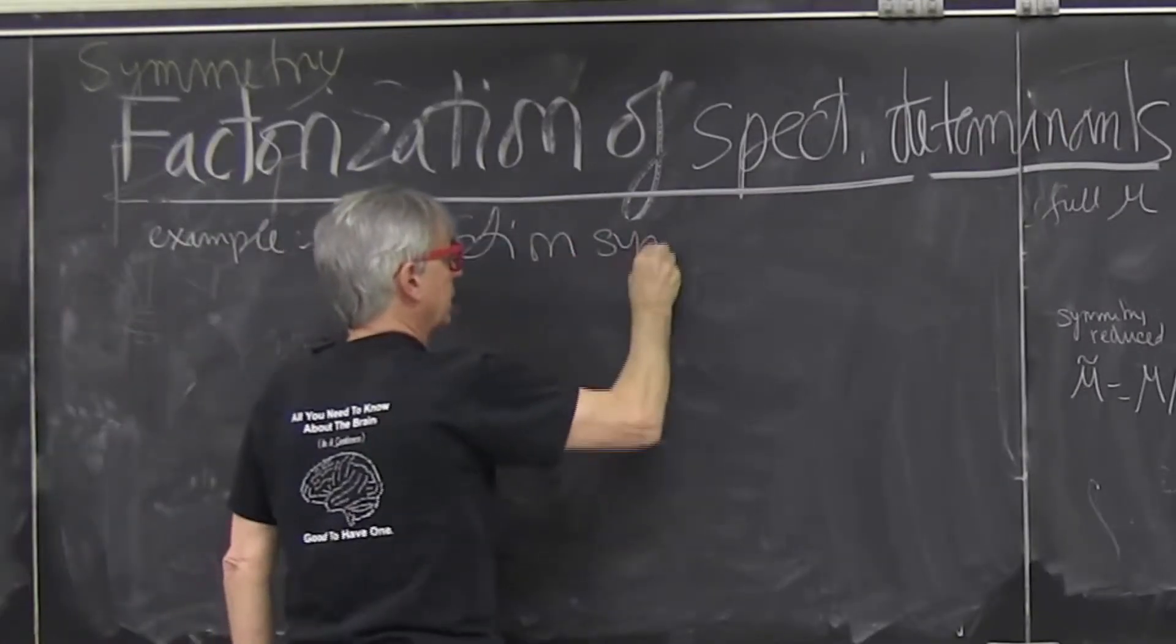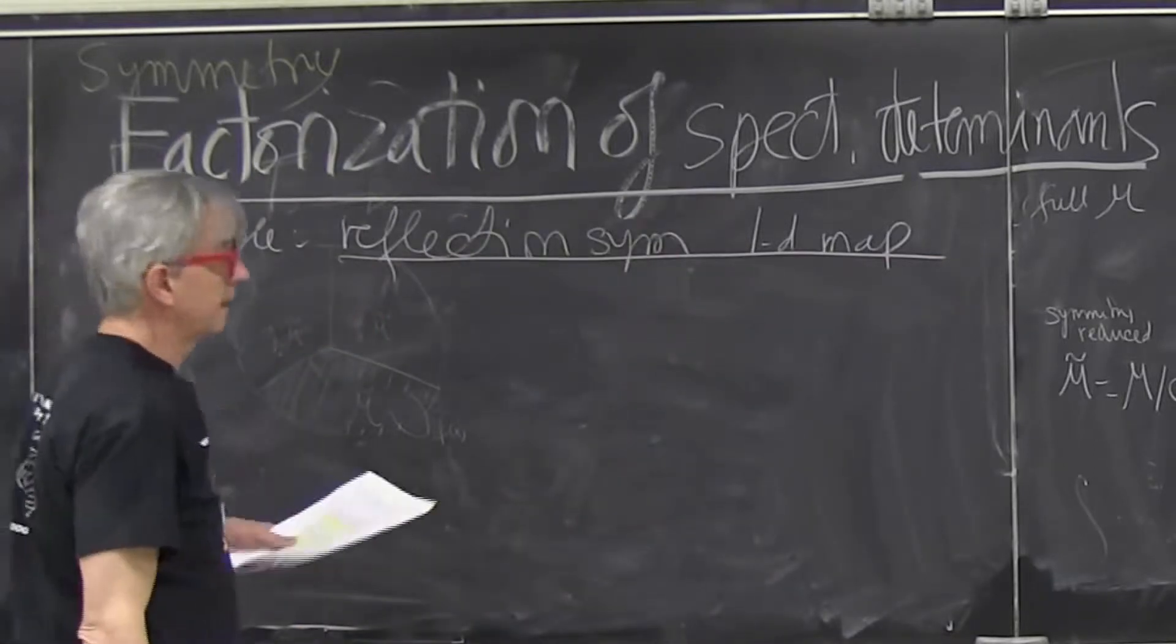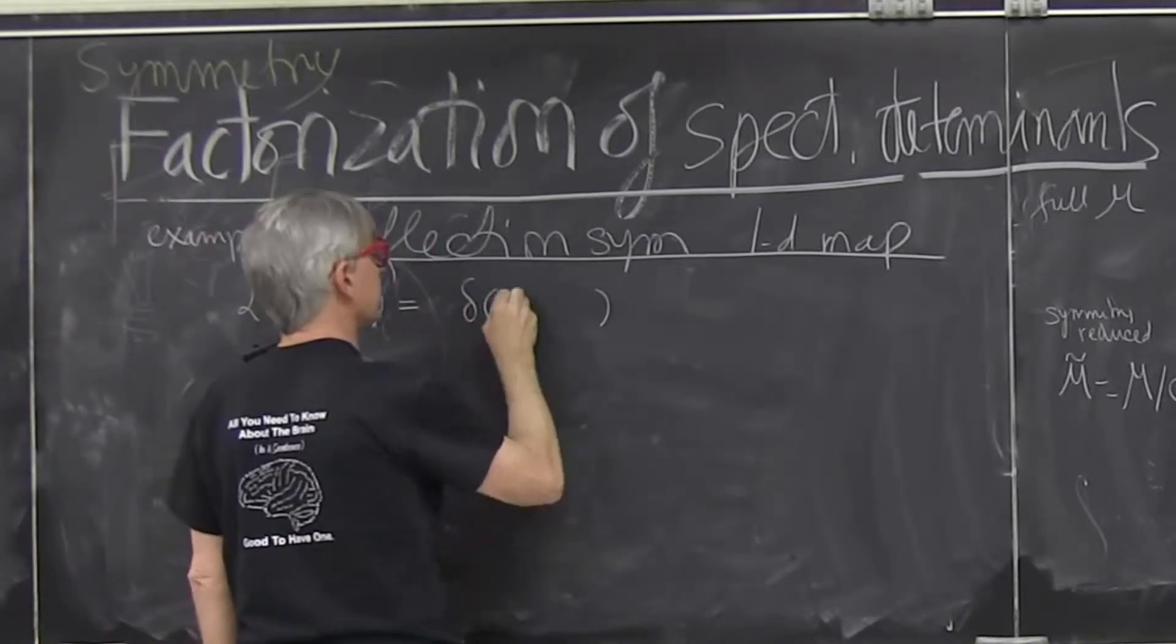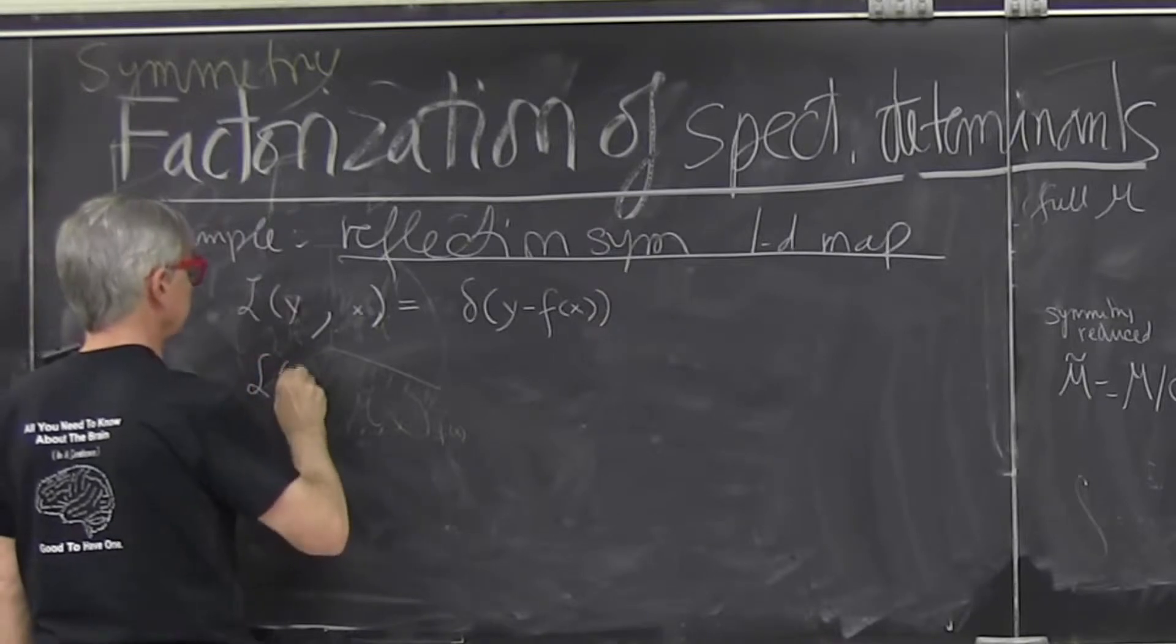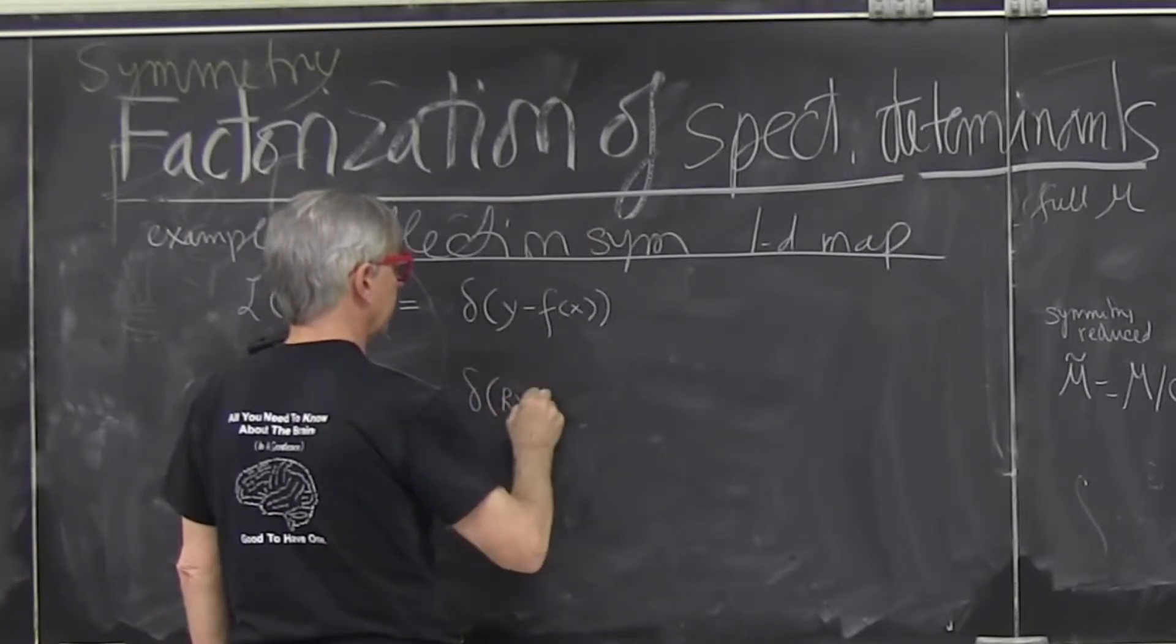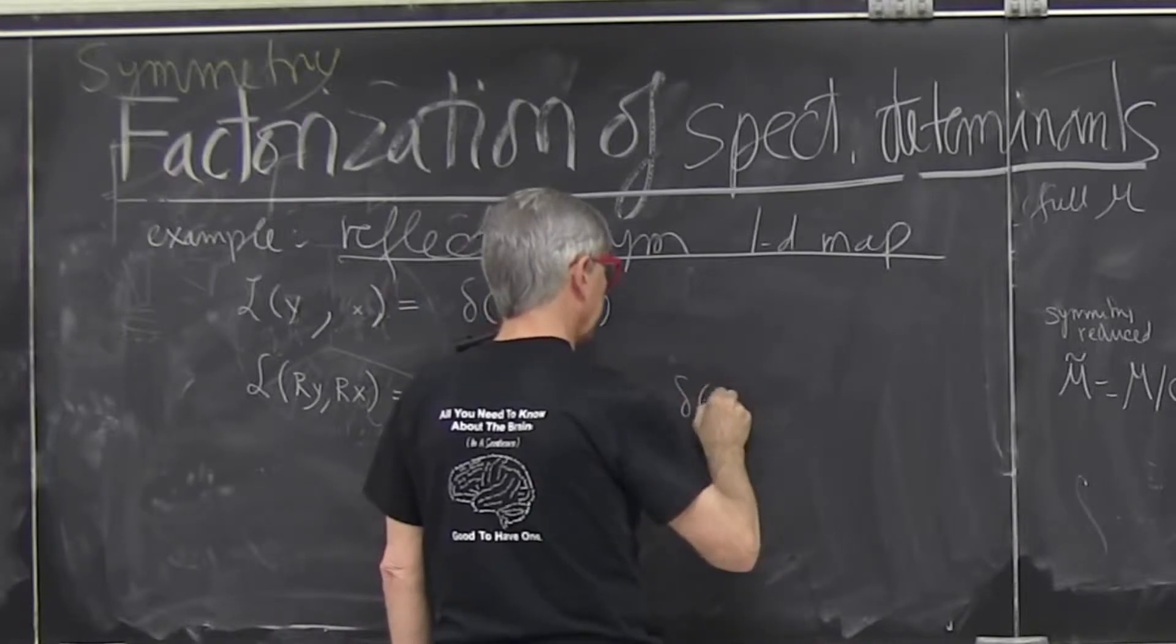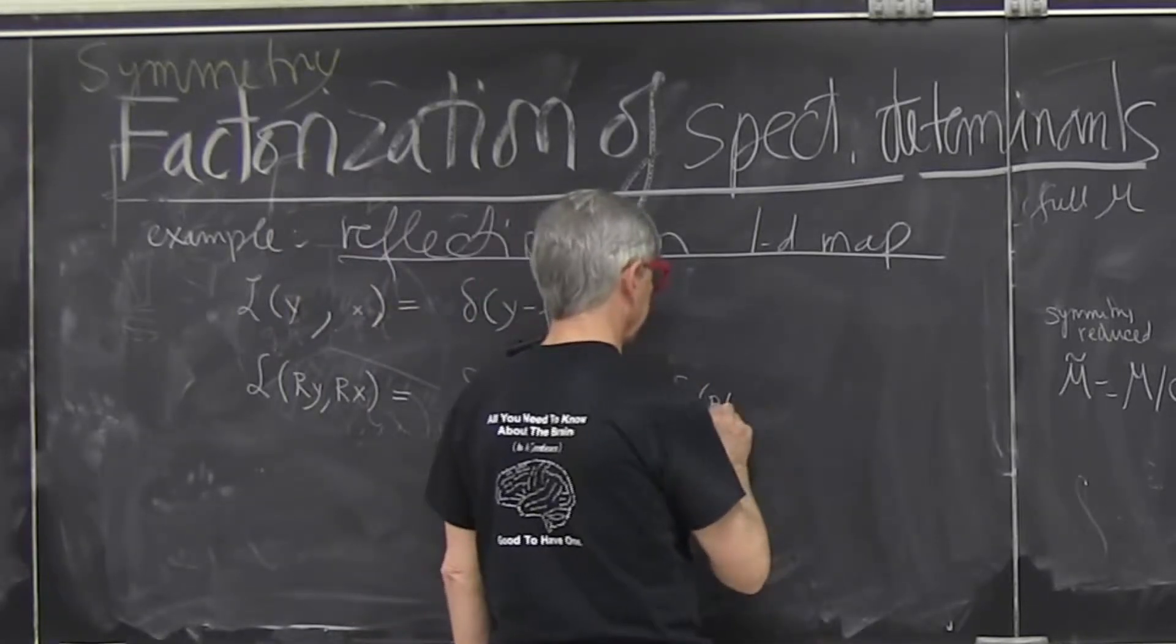Reflection symmetric 1-D map. Example of which is on the right-hand side. Evolution operator for one step in time is the direct delta function. If I apply operation to the final and initial point, there will be delta of r y minus f of r x, which by symmetry is delta of matrix operator r, which in this case is just plus or minus, either one or minus one.